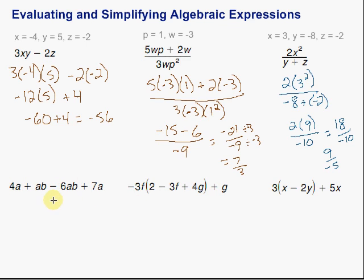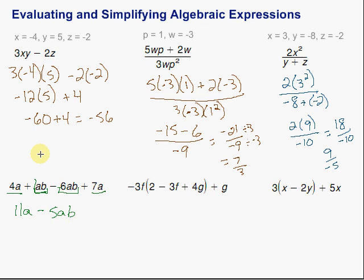Now we're asked to simplify these algebraic expressions. The key in simplifying is that we have to have the same variables to the same power in order to combine them. In this first one, we've got 4 a's and 7 a's — we can combine those. We also have an ab term and a minus 6ab — we can combine those. So 4a plus 7a gives us 11a. And 1 minus 6 gives us negative 5ab. We can't combine 11a and negative 5ab because they don't have the same variables to the same powers.